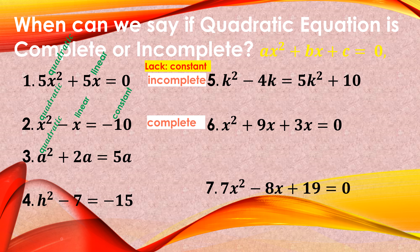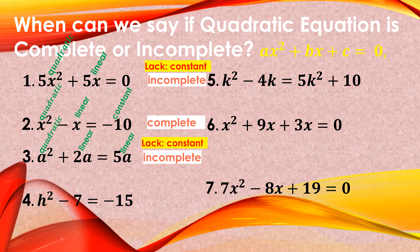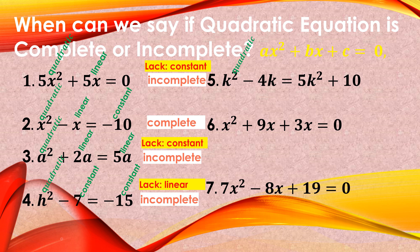For number 3, we have A squared as the quadratic term and 2A as the linear term, but 5A is also a linear term. So the constant term is lacking — it's incomplete. For number 4, B squared is the quadratic, but 7 and 15 are both constants — the linear term is lacking, so it's incomplete. For number 5, there is a quadratic, a linear, and a constant, so it's complete.